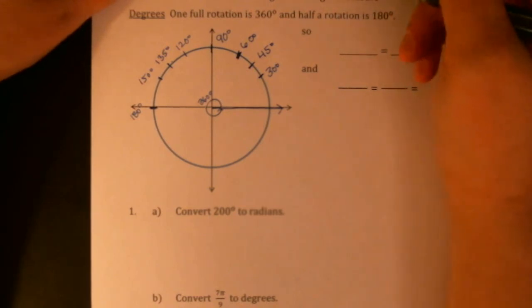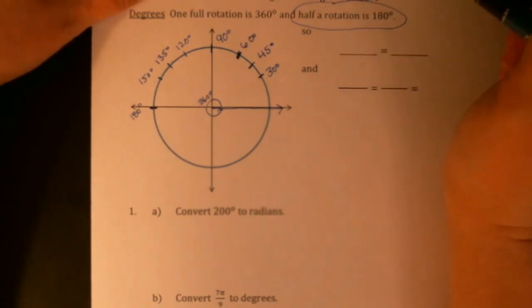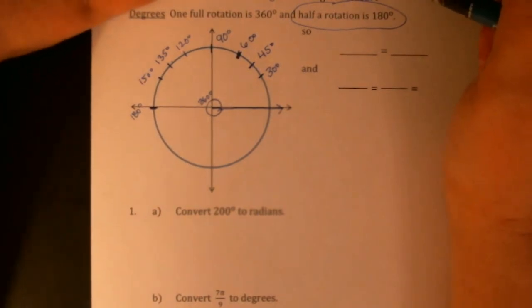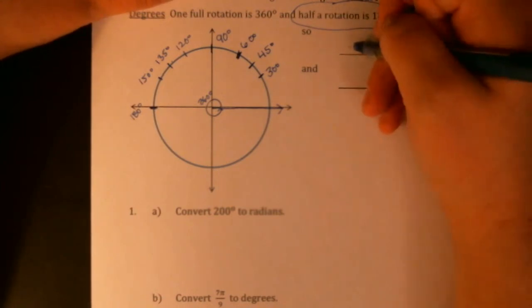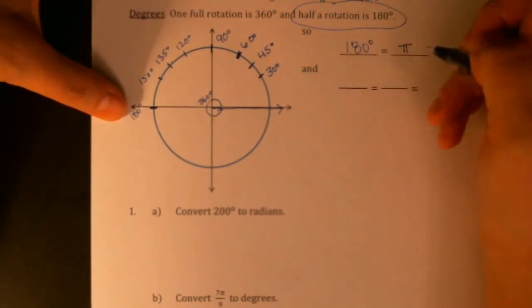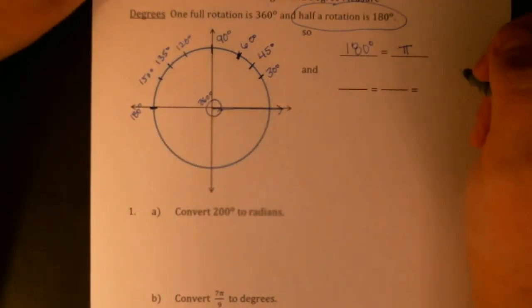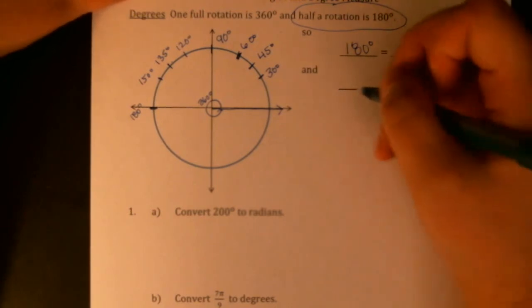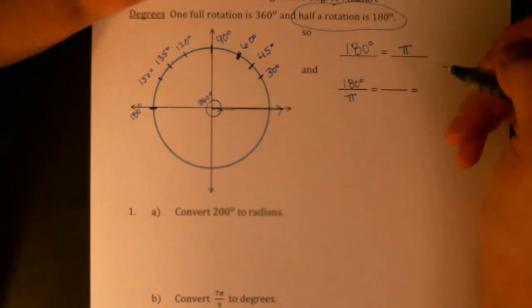Okay, so we want to use this: half a rotation is 180 degrees, and we're going to use it to build up our unit conversion. You could really use any, this one just works out nicely. If half a rotation is 180 degrees, then we could say 180 degrees is the same rotation as π radians. We know that π radians will put us in this exact same direction.